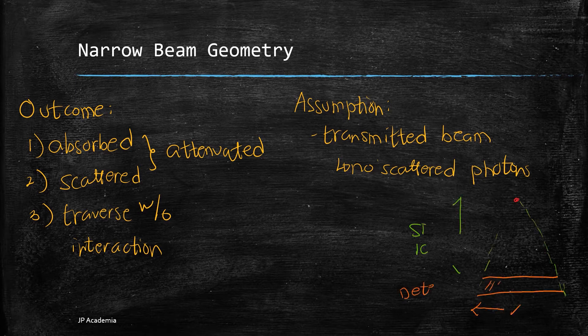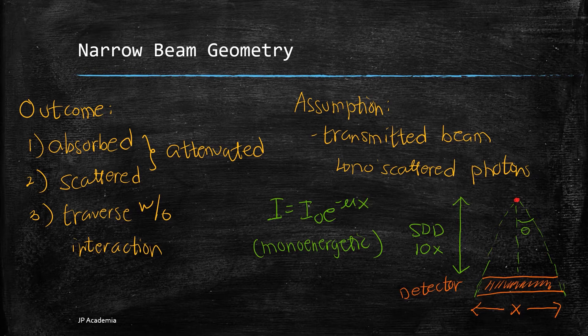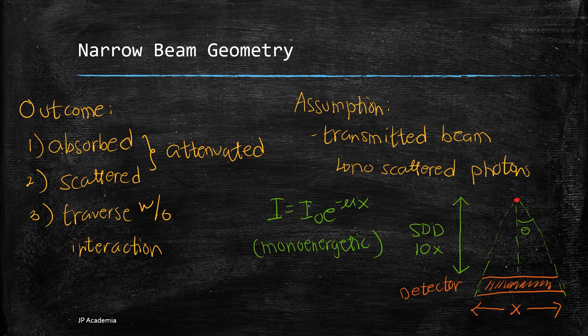This is relevant to situations in which experimental studies to investigate the properties of materials. As shown at the lower right, we have this setup wherein we have this x which refers to the size of the absorber or the detector, then we have the distance of your source to the detector, which is 10 times that variable x.